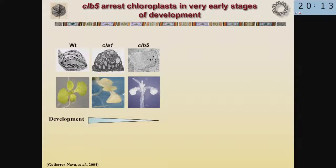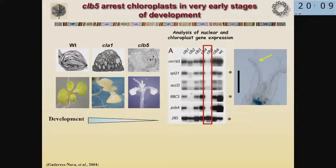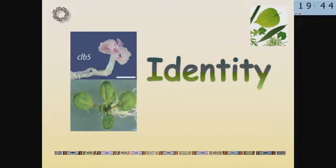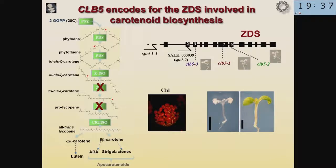However, CLB5 also importantly affects the expression of many genes encoded in the nucleus and in the chloroplasts. But what was very interesting to us was that it also affects the development of the leaves — they show finger-like projections. So we wanted to figure out more about this mutant, and we went ahead and identified the mutated gene. To our surprise, we found that the mutation producing this phenotype is a defect in an enzyme involved in carotenoid biosynthesis. That was surprising.